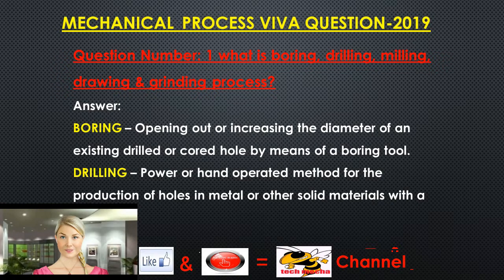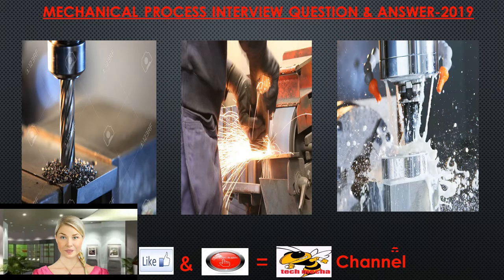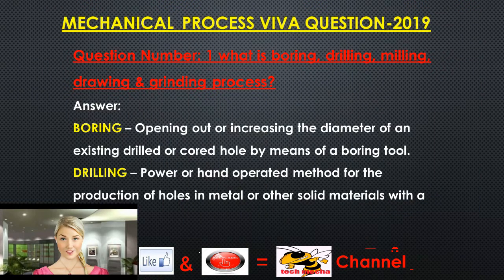Question 1: What is boring, drilling, milling, drawing, and grinding process? Boring is opening out or increasing the diameter of an existing drilled or bored hole by means of a boring tool. Drilling is a power or hand-operated method for the production of holes in metal or other solid materials with a drill. Grinding is a finishing operation designed to give parts already machined the necessary precision of form and accuracy of dimensions.